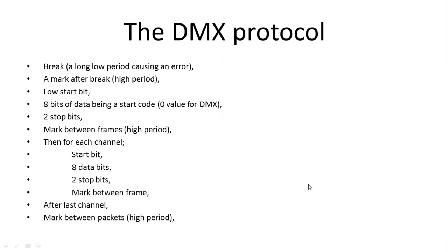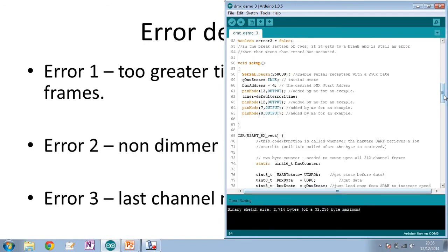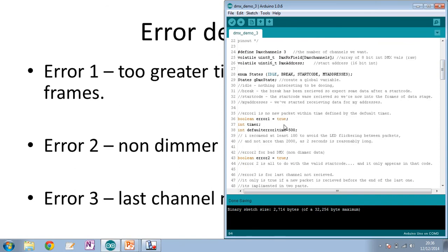Things I've added to this code include some error detection. I've identified three possible errors. Error one is that there are excessively long time periods between frames — basically that no DMX is coming in. You can define how long this window is in the code. Error one works on a countdown timer — not a real hardware timer, not Arduino processing cycles, just cycles of code.